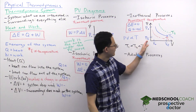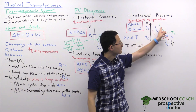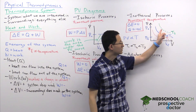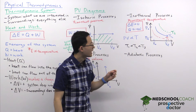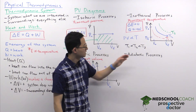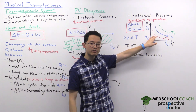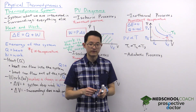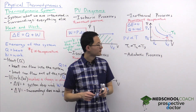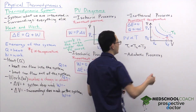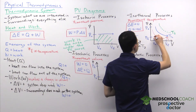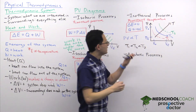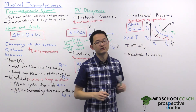To rank isotherms by temperature on a PV diagram: isotherms positioned higher and to the right have larger pressure and volume values, giving a larger PV product and therefore higher temperature. In other words, temperature increases going up and to the right on a PV diagram.